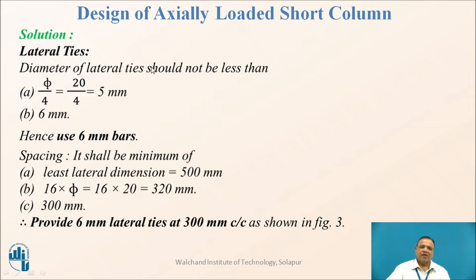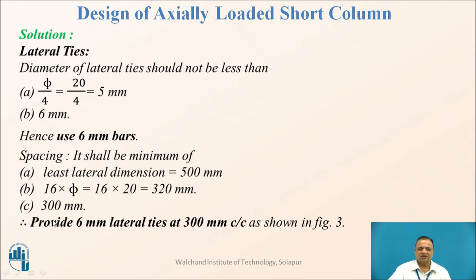For lateral ties, the diameter should not be less than the bar diameter divided by 4, 5 mm, or 6 mm minimum. Hence, use 6 mm bars. The pitch shall be the minimum of: least lateral dimension (500 mm), 16 times the diameter of the longitudinal bar (16 × 20 = 320 mm), or 300 mm. The least value is 300 mm. Therefore, provide 6 mm lateral ties at 300 mm spacing.